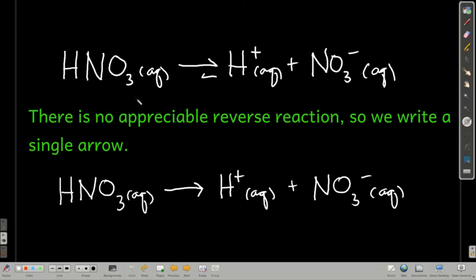So, nitric acid is one of those, it's a strong acid. When we put it into water, there's somewhat of an equilibrium, but the reverse equilibrium is so small, it's really immeasurable with our current technology. So we ignore it, justifiably so, and we only write a single arrow. This is true for all strong acids.